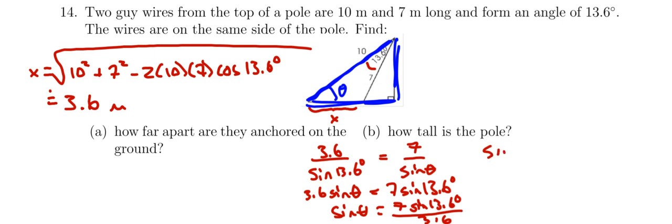So I will get that the sine of theta is equal to, now when I do this calculation, I am going to use that whole side length that I just figured out. So I'm going to do 7 multiplied by the sine of 13.6, that's that numerator there.